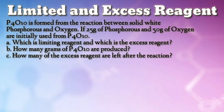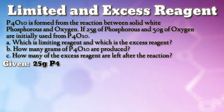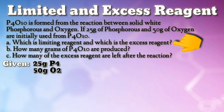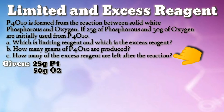Before you start solving, identify first the given and the unknown, as always. Given: mass of P4 = 25 grams; mass of oxygen = 50 grams. The unknown: determine which between phosphorus and oxygen is the limiting and excess reagent. You also need to compute the amount of product based on the limiting reagent, and the amount of excess reagent left when the reaction is completed.